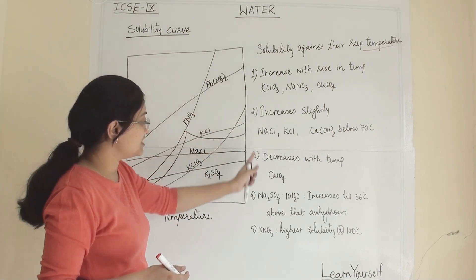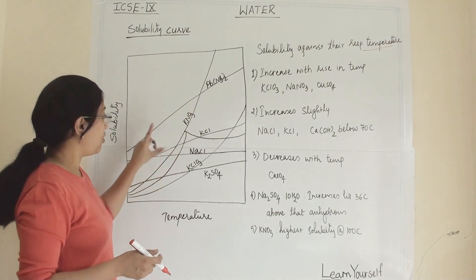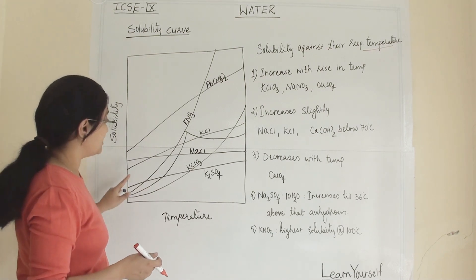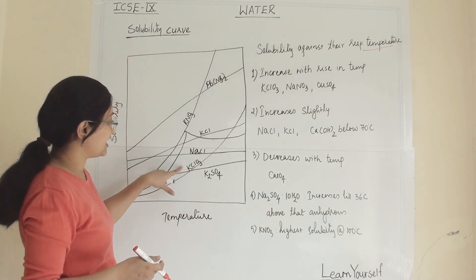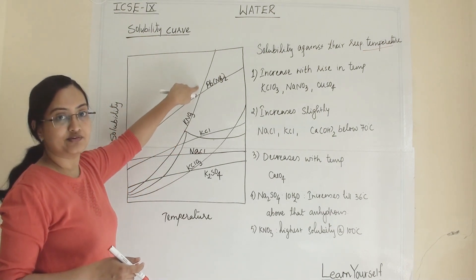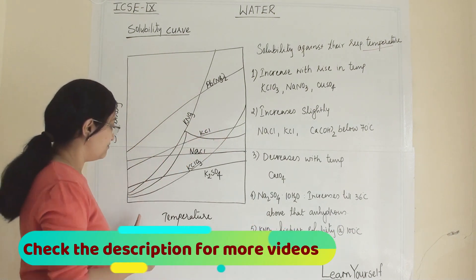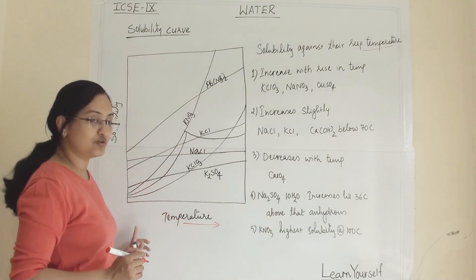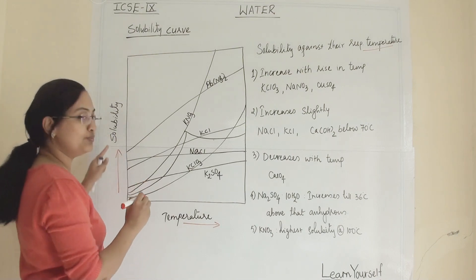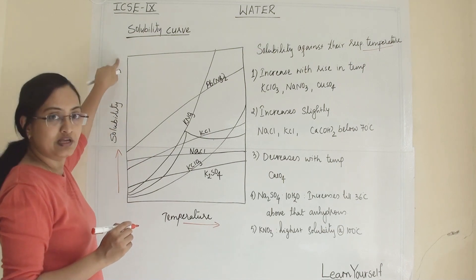Here I have listed some salts and plotted a rough diagram of solubility versus temperature. The salts mentioned are K₂SO₄, KClO₃, NaCl, KCl, KNO₃, and lead nitrate Pb(NO₃)₂. On the x-axis, temperature increases from left to right, and on the y-axis, solubility increases from bottom to top.